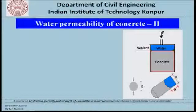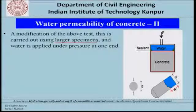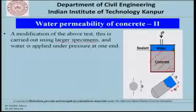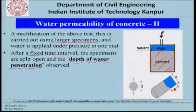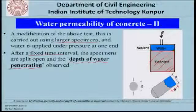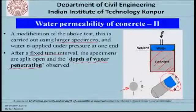A variation of that test, in which water does not necessarily have to appear at the other end, uses a large concrete specimen. Water is ponded on one side, pressure is applied, and after a fixed time the specimen is split. The depth of water penetration is observed, and this depth of penetration becomes an indicative parameter for the permeability of concrete.